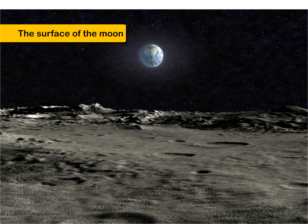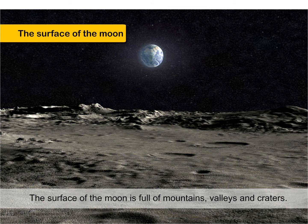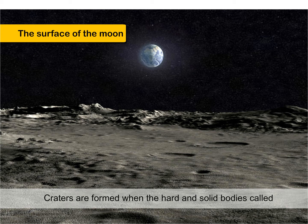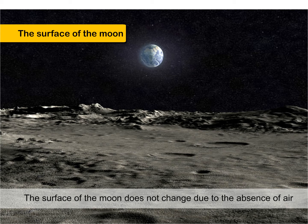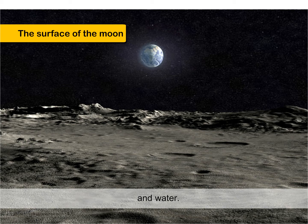The surface of the moon. The surface of the moon is full of mountains, valleys, and craters. Craters are formed when the hard and solid bodies, called meteorites, drop on the surface of the moon. There is no atmosphere and no sound can be heard on it. The surface of the moon does not change due to the absence of air and water.